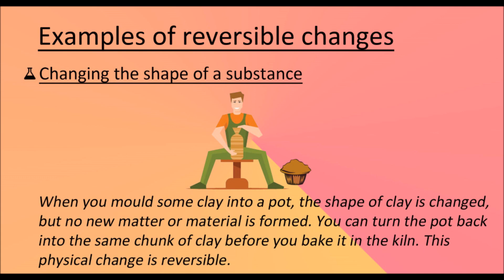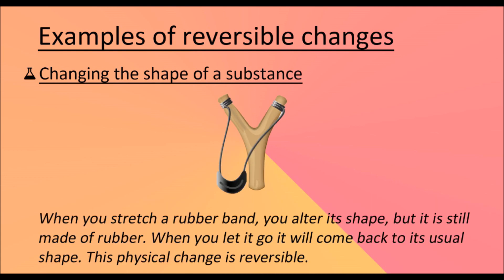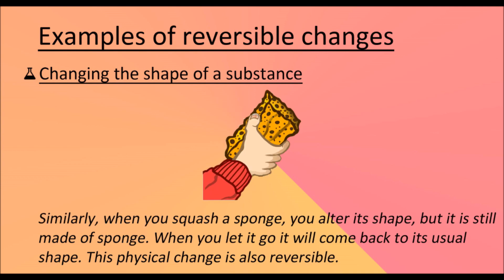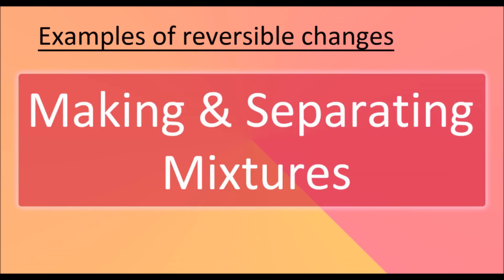When you mold clay into a pot, the shape changes but no new matter or material is formed. You can turn the pot back into the same chunk of clay before baking it — this physical change is reversible. When you stretch a rubber band, you alter its shape, but it is still made of rubber; when you let it go, it returns to its usual shape — reversible. Similarly, when you squash a sponge, you alter its shape, but it is still made of sponge; when you let it go, it returns to its usual shape — also reversible.